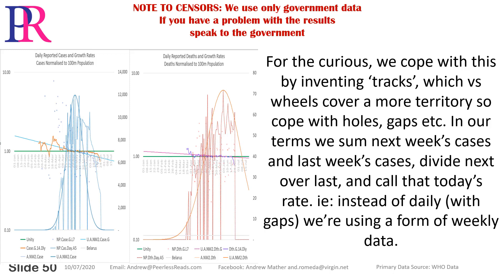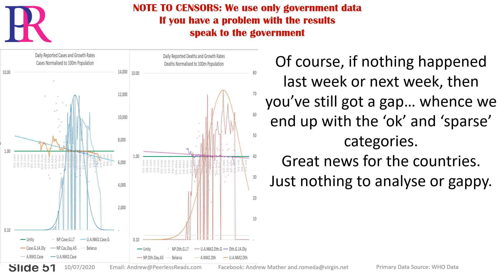For the curious, we cope with this by inventing tracks — which versus wheels cover more territory to cope with holes and gaps. In our terms, we sum next week's cases and last week's cases, divide next over last, and call that today's rate. Instead of daily with gaps, we're using a form of weekly data. Of course, if nothing happened last week or next week, then you've still got a gap — whence we end up with the OK and sparse categories. Great news for the countries, just nothing to analyse or they're gappy.